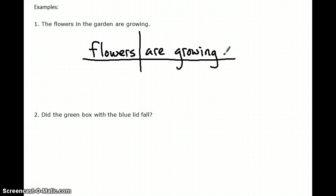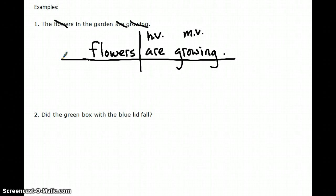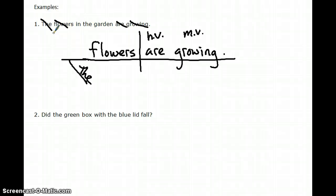Are and growing form a verb phrase — are is the helping verb, growing is the main verb; the verb grow is just changing in tense. Now, the answers which flowers — adjectival. And in the garden is a prepositional phrase. In is the preposition, garden is the object. It answers the question which flowers — which ones is an adjectival question — so the prepositional phrase in the garden goes under the noun flowers.